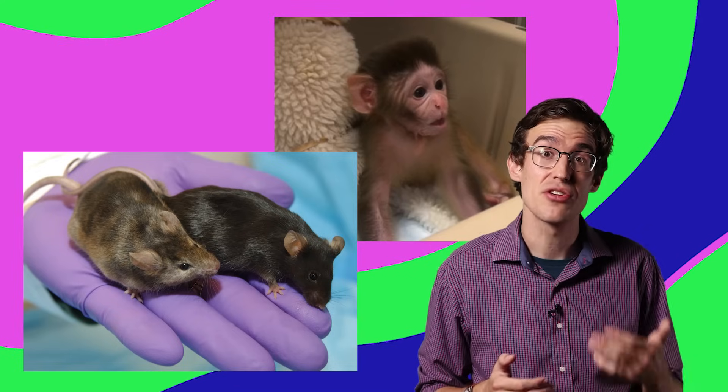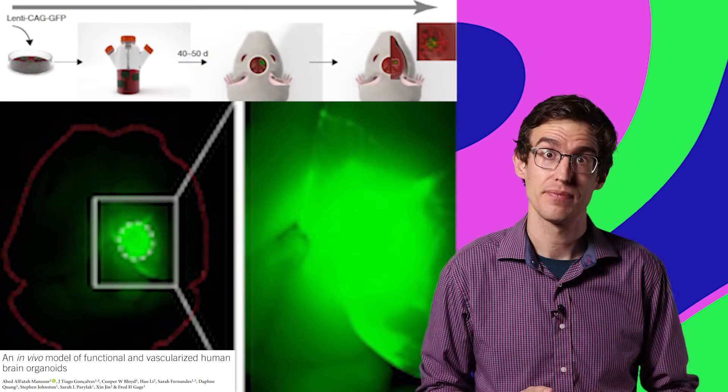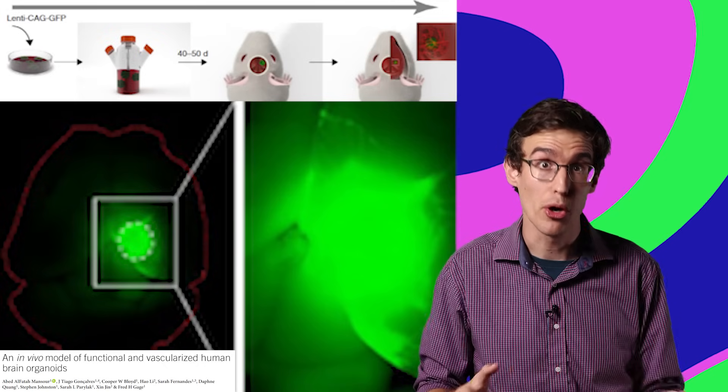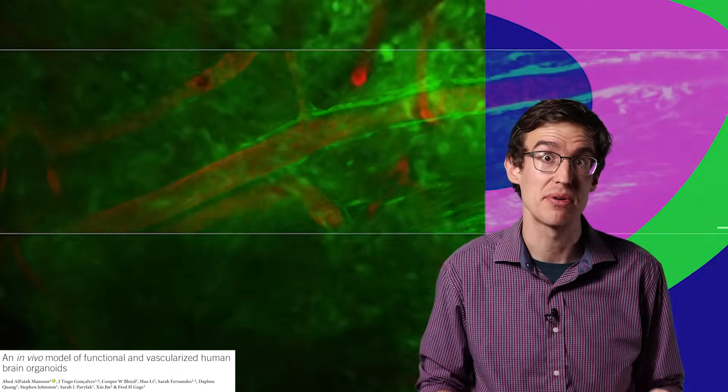The really weird part is when we put human mini-brains into those animals. Which we're already doing, of course. These guys put mini-brains into live mouse brains, and they started to merge. Blood vessels from the host brain infused the mini-brain and kept it alive.